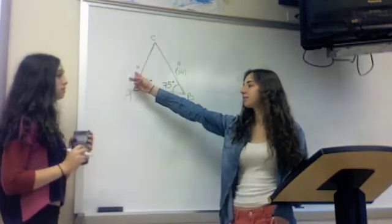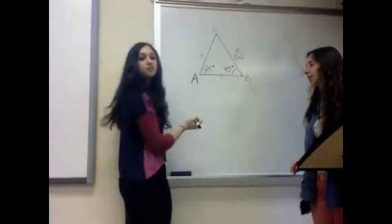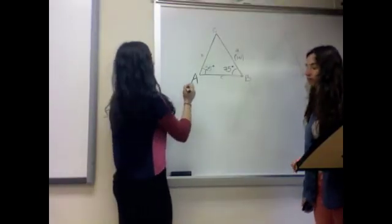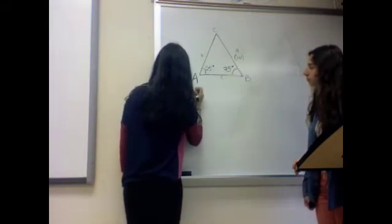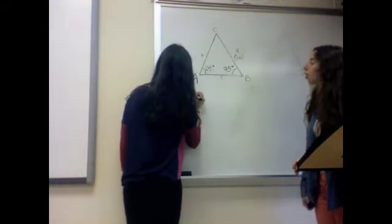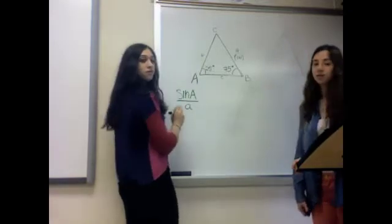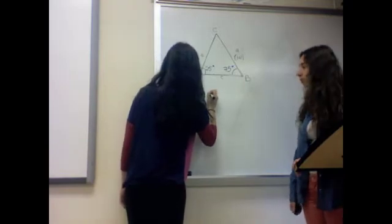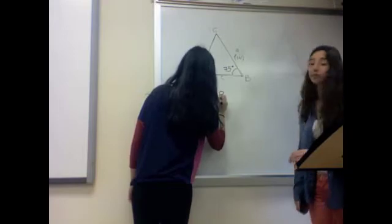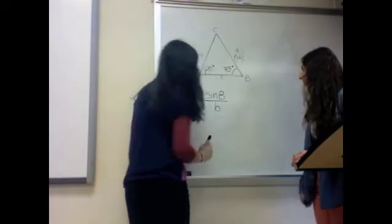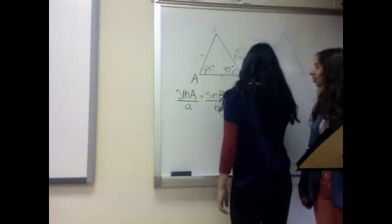How do we find side B? The law of sines says that sine A over side A equals sine B over side B, which equals sine C over side C.